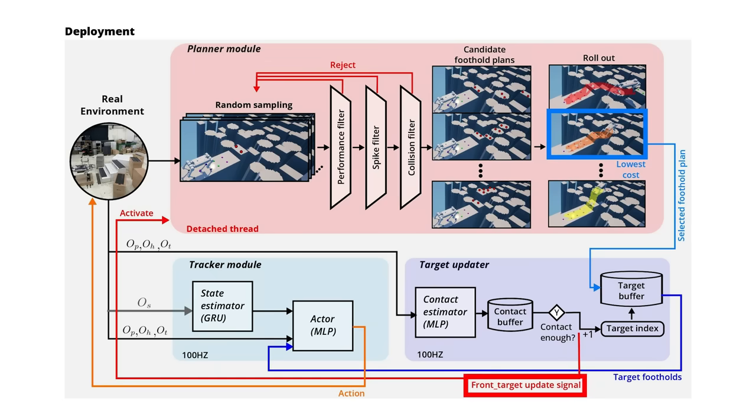When the front target is updated, it activates the planner module. The planner module runs simultaneously on a detached thread. While the tracker module controls the robot to precisely step on the next target, the planner module generates a feasible and safe foothold plan. To reduce time complexity in planning, the rear foot steps where the front foot has stepped.